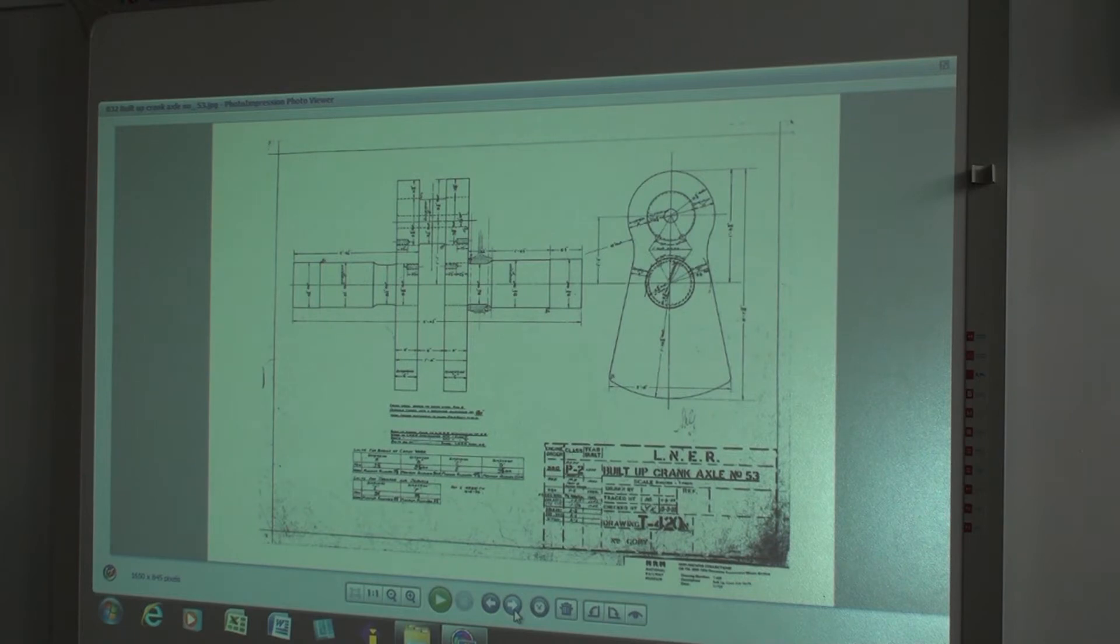If you put a piece of string and swing it around your head, it just stays out there, centrifugal force. And the weight of all those conrods, as they're going up and down, they have to be balanced out, otherwise it would break the locomotive to pieces. So this is part of the balancing system.